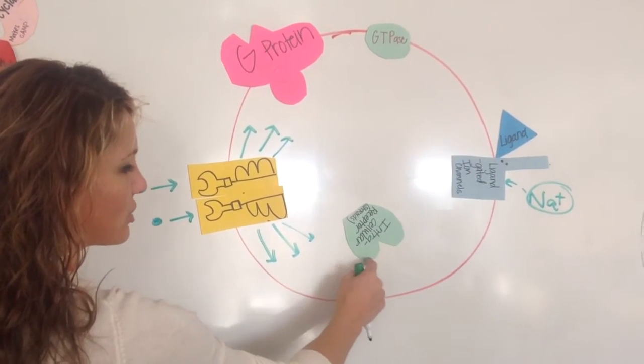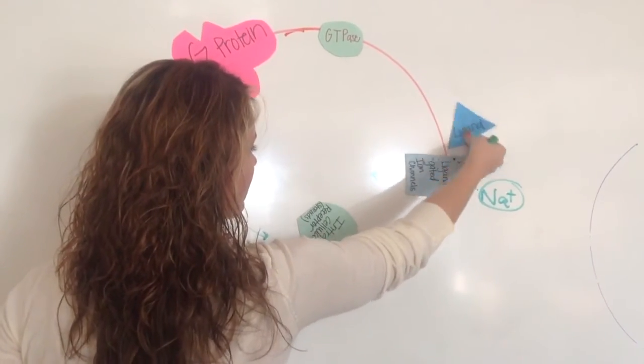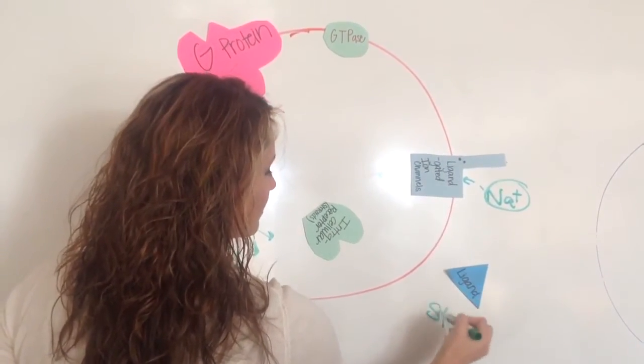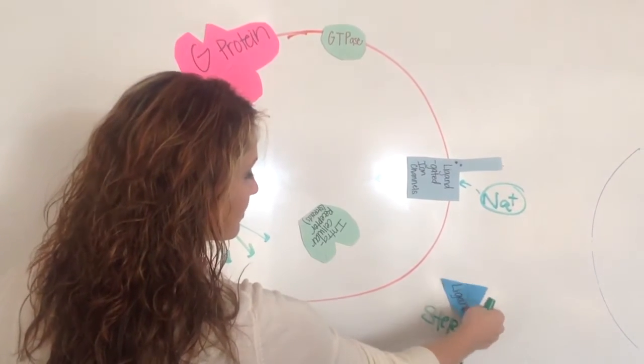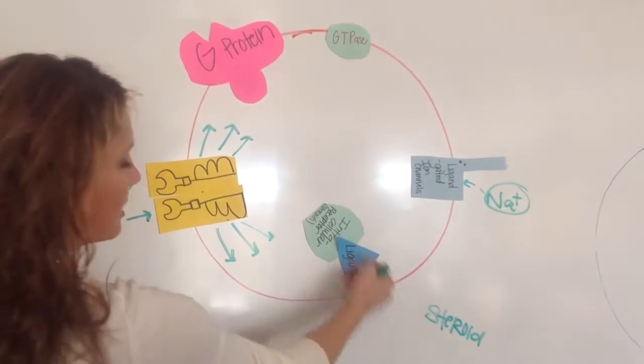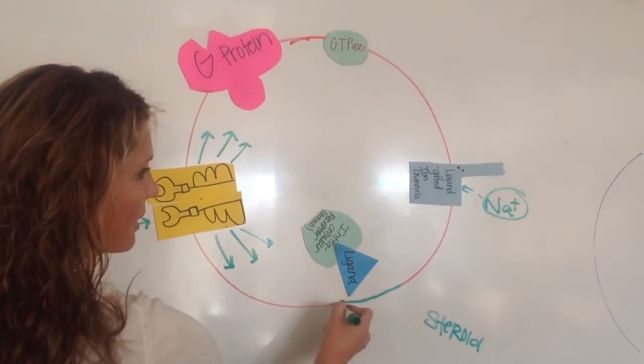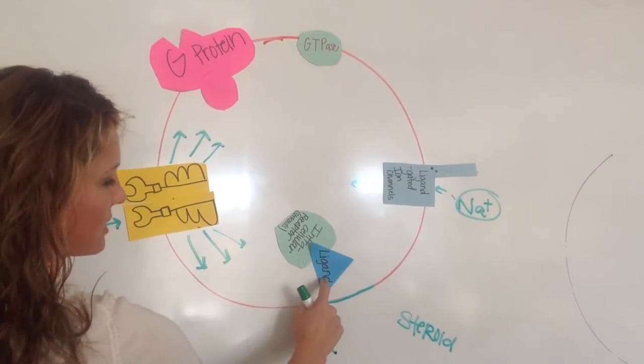This one right here is intracellular receptors. So the ligand, which is a steroid this time, when the ligand binds, it actually binds on the inside of the cytoplasm. So it comes in, it goes through the cell membrane, it goes into the cytoplasm or the cytosol. So this one's for steroids.